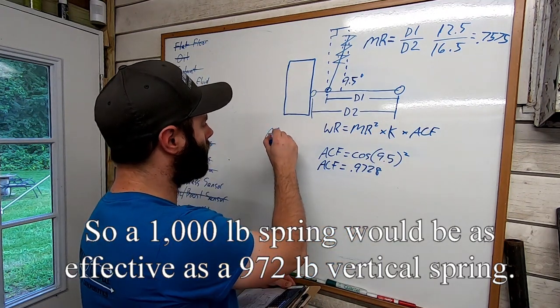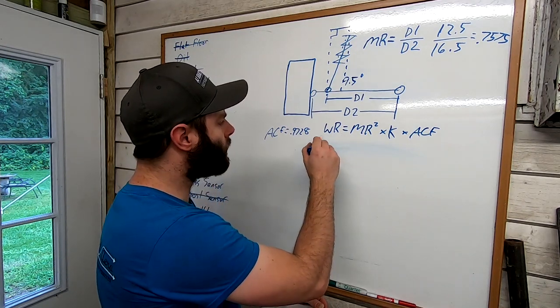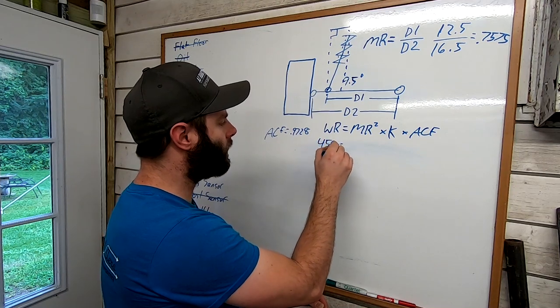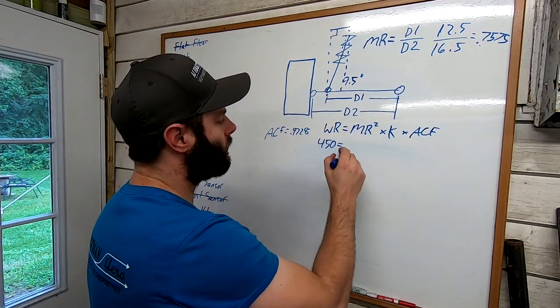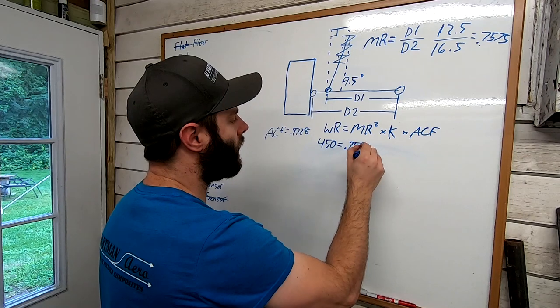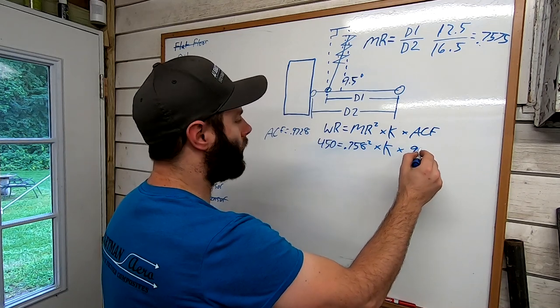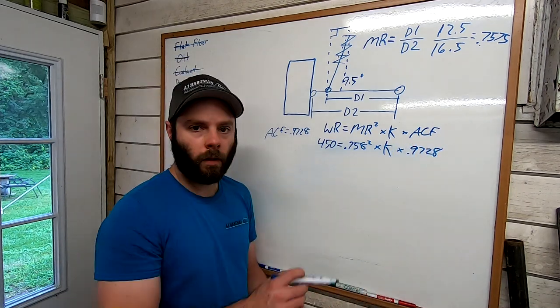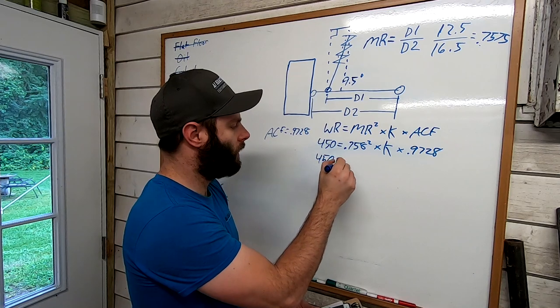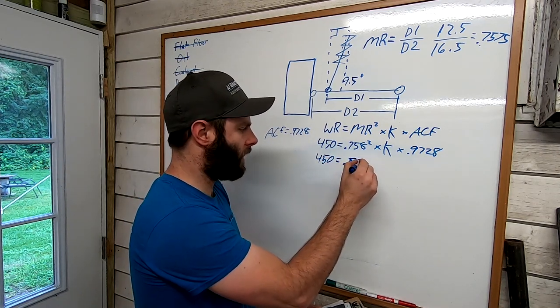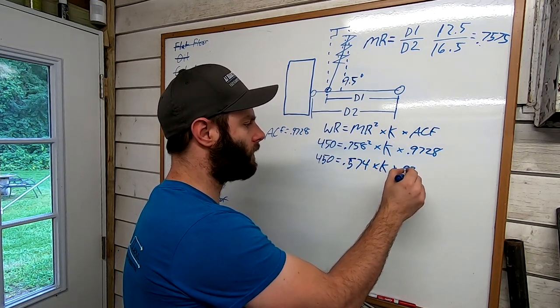So now we can start plugging everything into this equation here. So if we want a wheel rate of 450, the motion ratio squared, which up here's our motion ratio, so it's 0.758 squared times K, we'll leave that alone, times 0.9728. So basic high school algebra, you do your exponents first, so 450 equals 0.574 times spring rate times 0.9728.